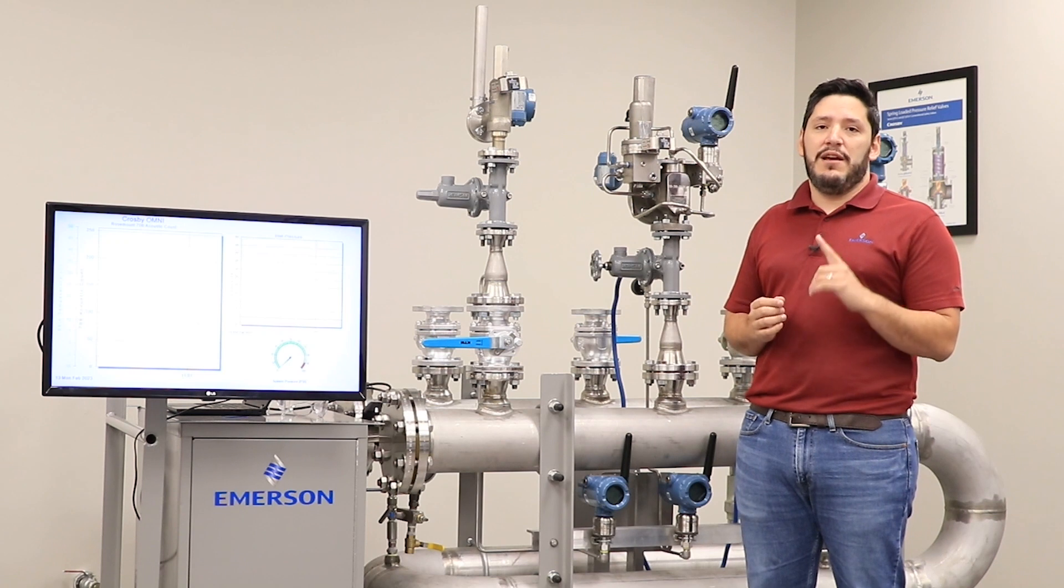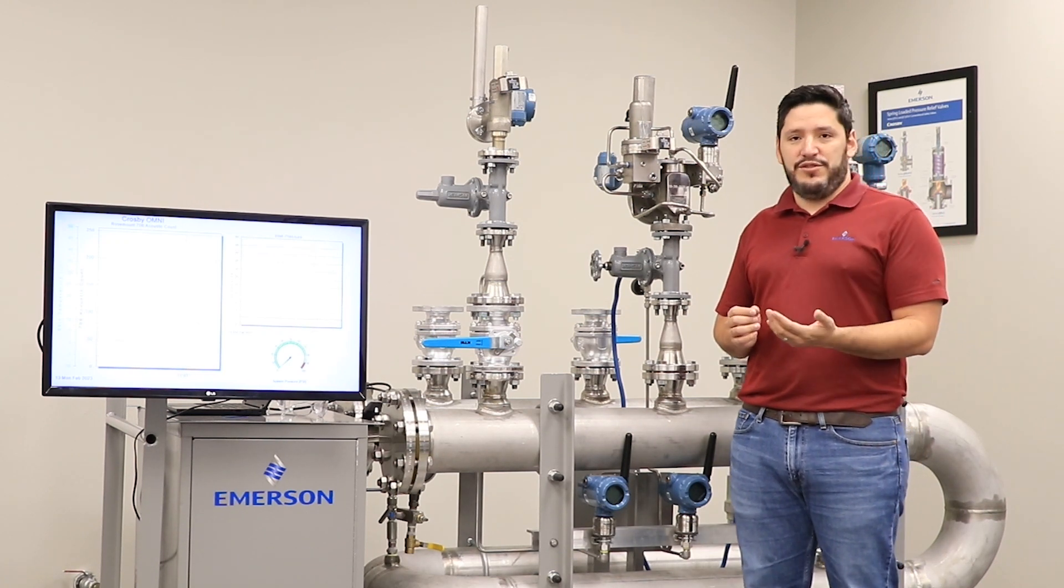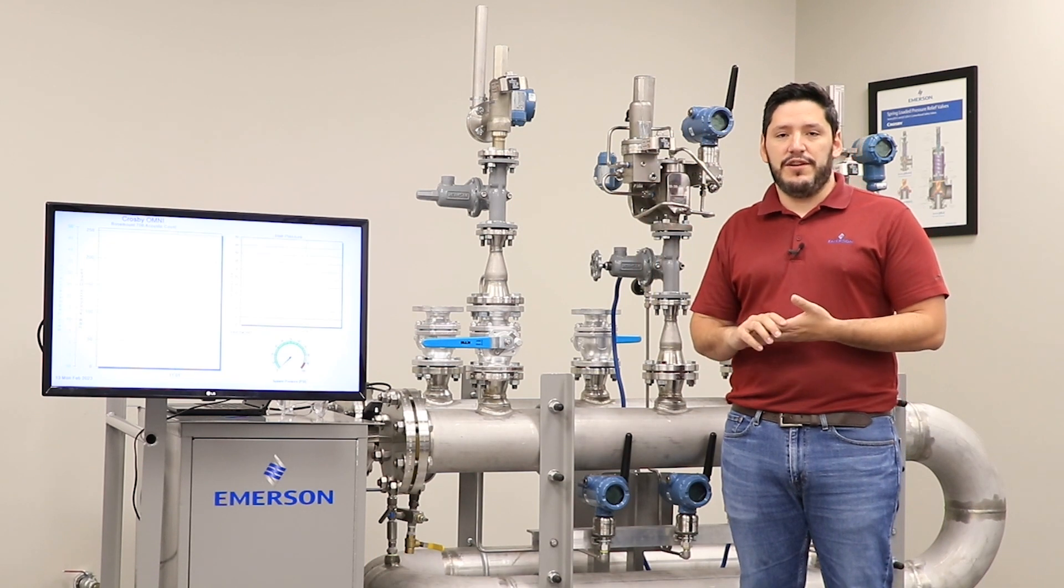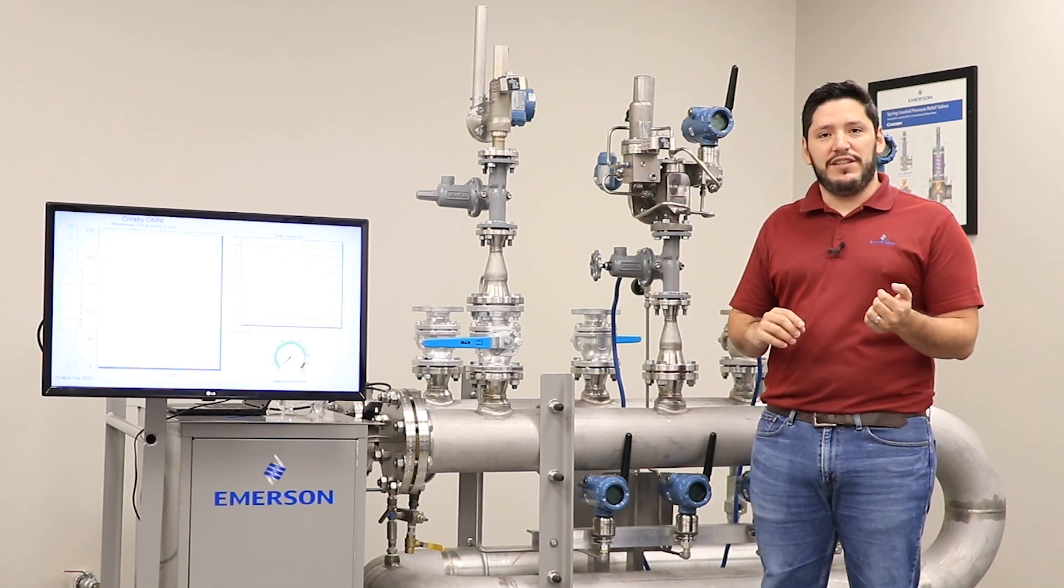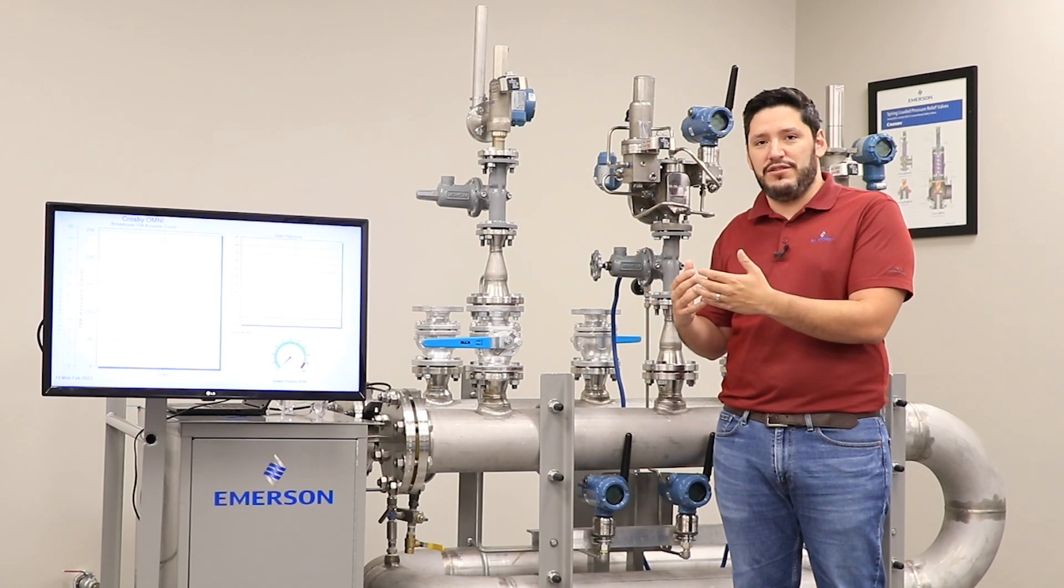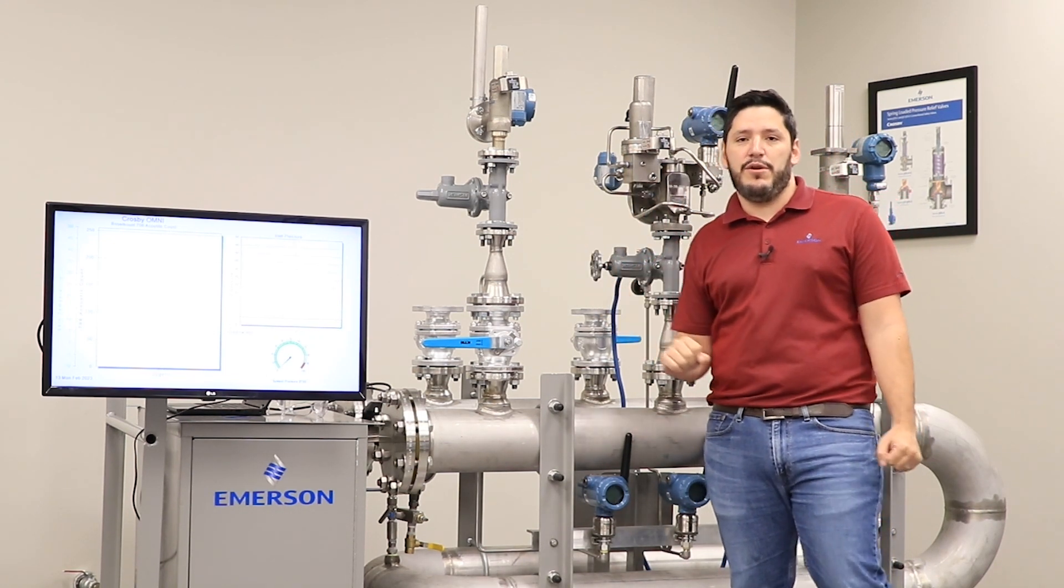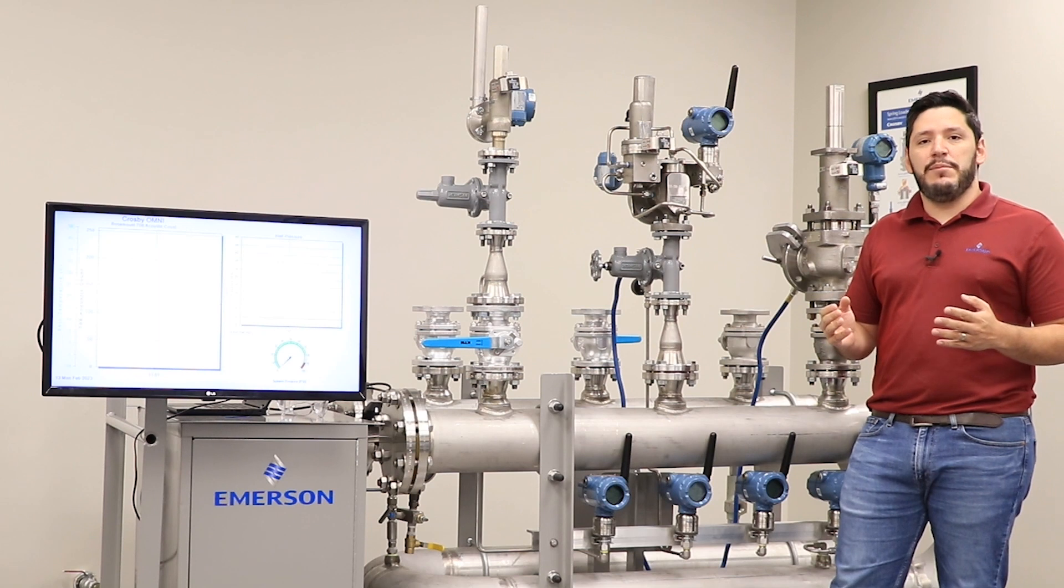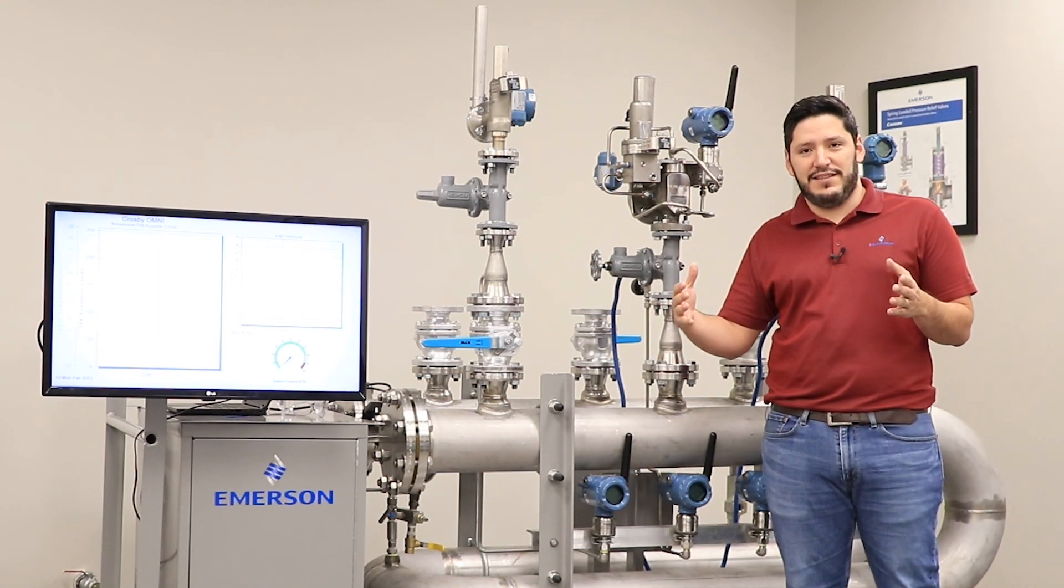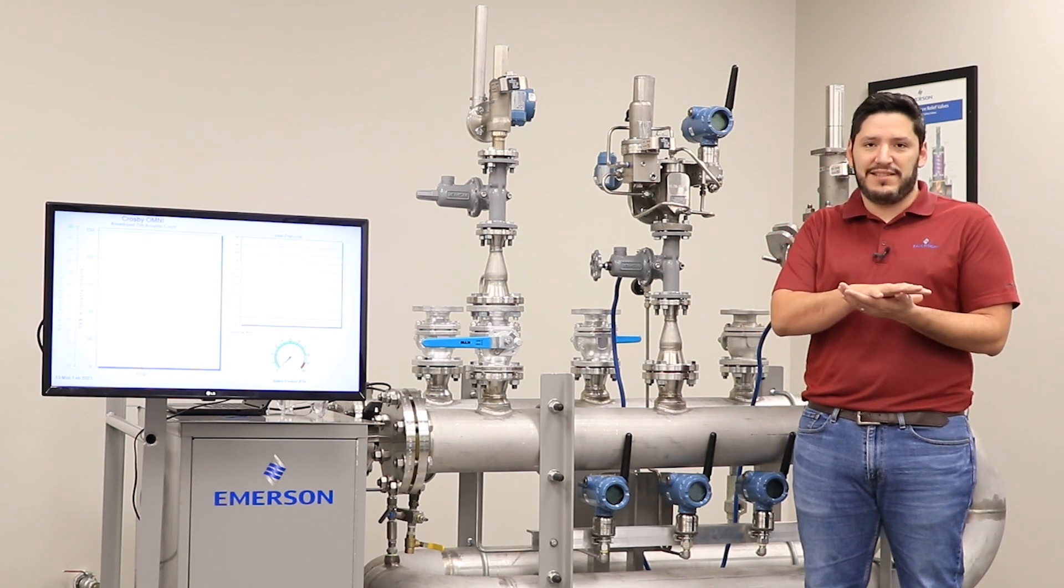The first one, and probably the most important one, is emissions. When these valves go off, we're putting emissions out into the atmosphere. Number two is productivity. Product losses and process optimization is something we can achieve through PRV monitoring. Number three is reliability, and this pertains to how available our process is and how we optimize our asset utilization.